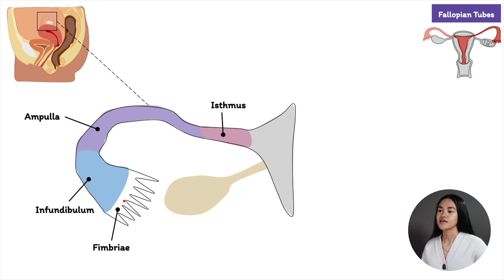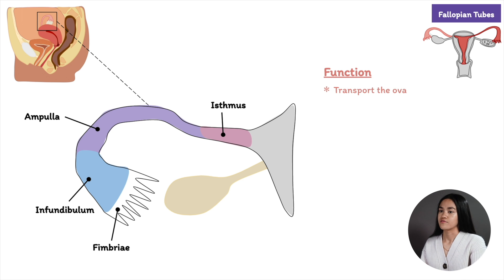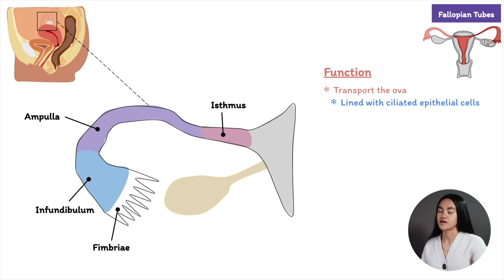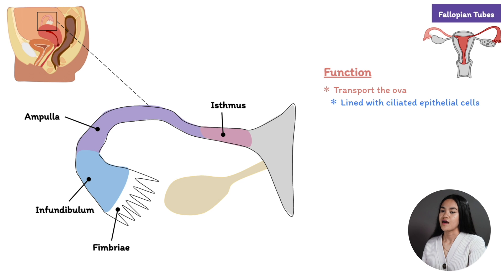The fimbriae are finger-like ciliated projections lined with ciliated epithelium that capture the ovum from the surface of the ovary. The fallopian tubes transport the egg from the ovary to the uterus each month. The tubes are lined with ciliated columnar epithelial cells that sweep the ovum toward the uterus and provide nutrients. This movement is caused by the cilia and by peristalsis — rhythmic contractions of the smooth muscle layer. The muscle is sensitive to sex steroids; when estrogen levels are high, peristalsis increases.